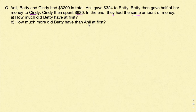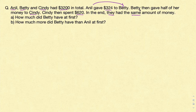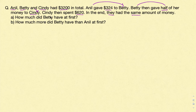So we have three people — Anil, Betty and Cindy — and in total they had $3,200. Anil gave $324 to Betty. After receiving $324 from Anil, whatever amount Betty had, Betty then gave half of her amount to Cindy. Then Cindy spent $320. In the end, all of them had the same amount of money. We need to find how much money Betty had at first, and how much more Betty had than Anil at first.